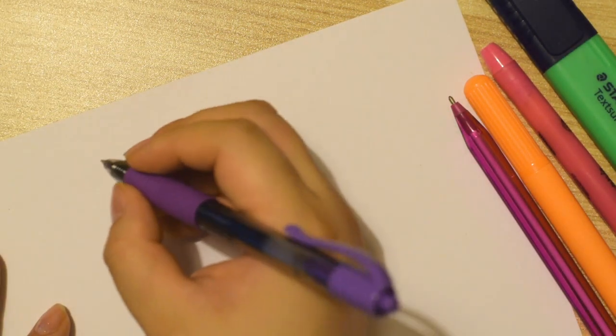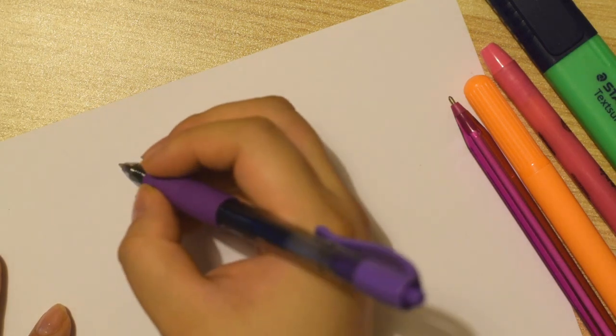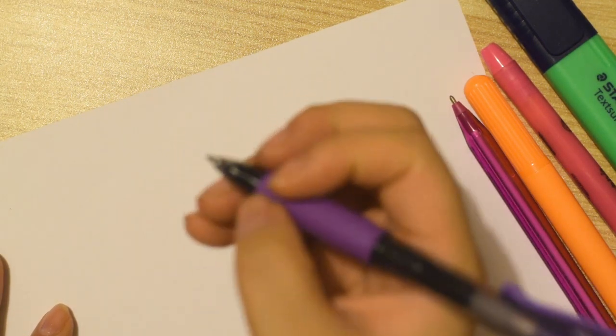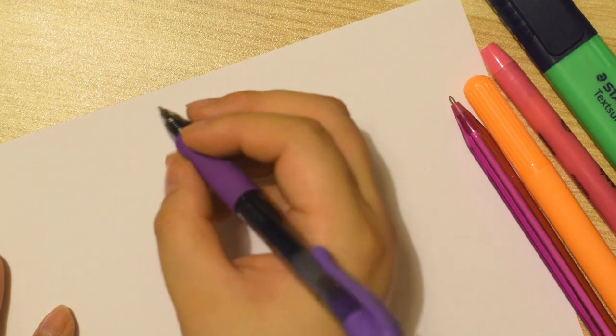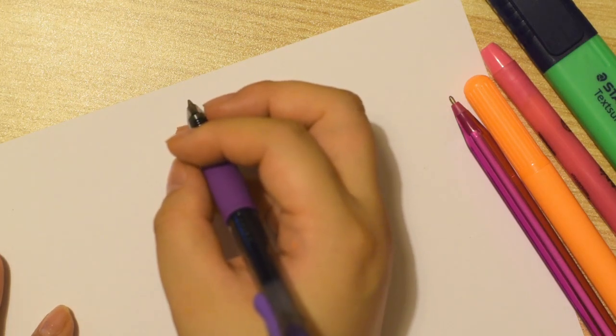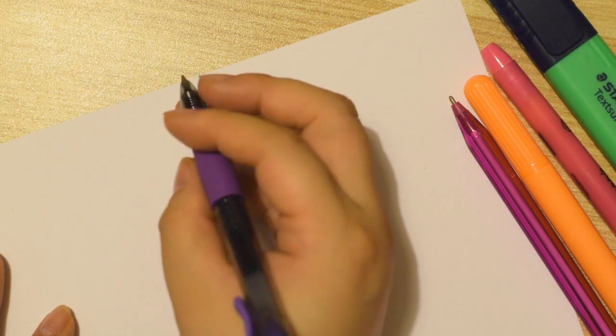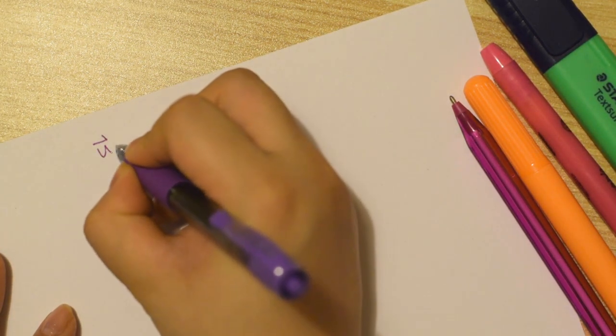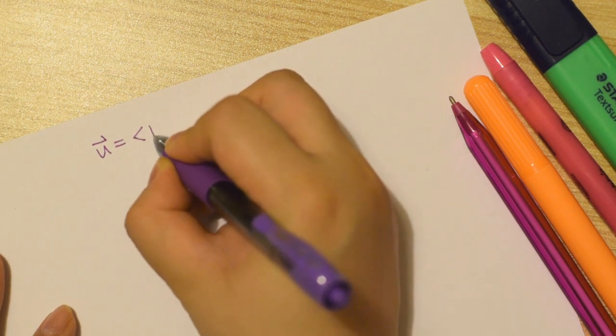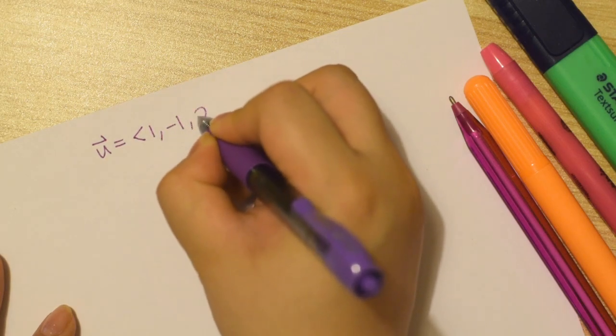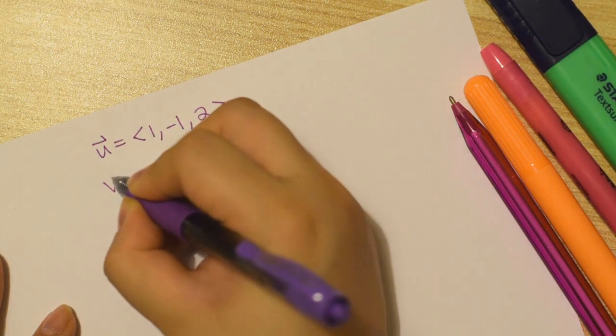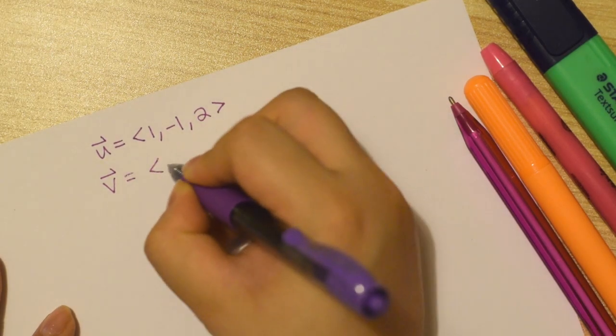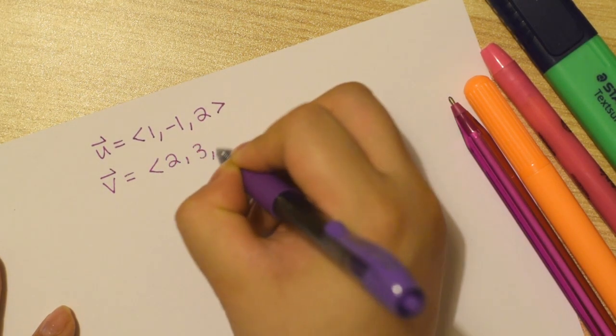Today let's find the cross product, the cross product of two vectors, and let's use the same vectors that we used in the vector notation slash dot product video. So u is 1, negative 1, 2, and v is 2, 3, 0.